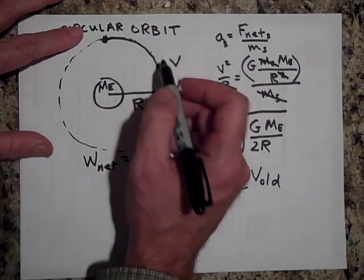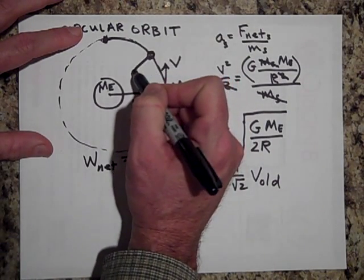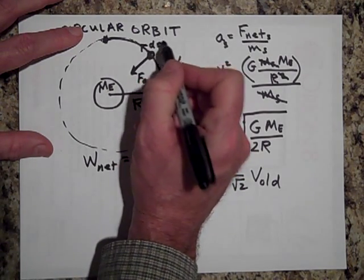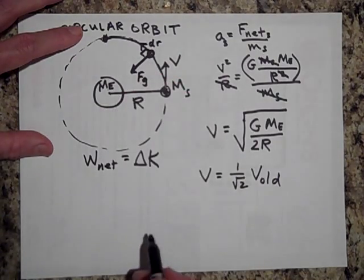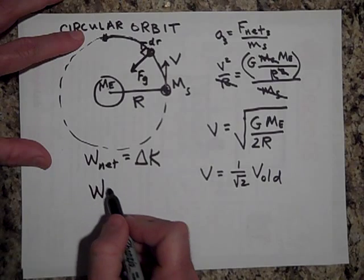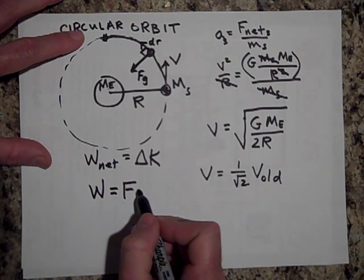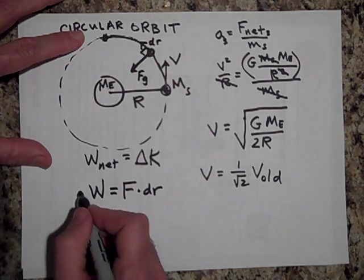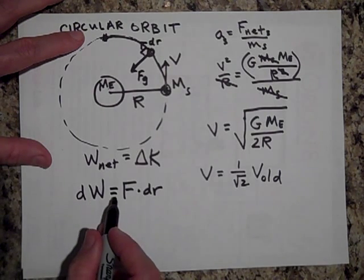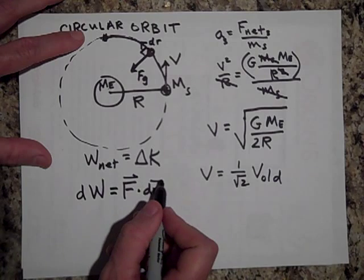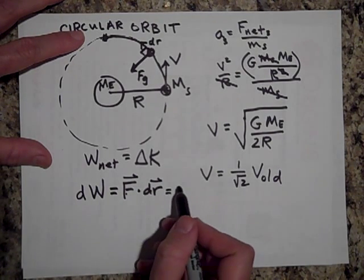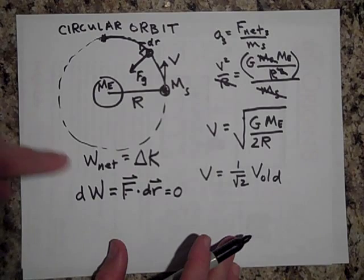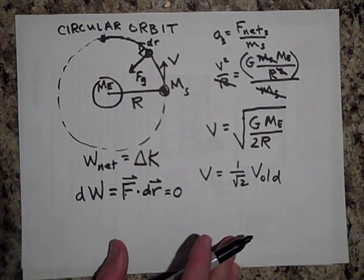Another way to see this: the force of gravity at any point is directed inward, and the displacement dr is tangential — they're perpendicular. The work done in a tiny displacement is dW = F · dr, and since F and dr are perpendicular, this dot product equals zero at every point along the way. So no work is done not just over a full rotation, but at every single point.